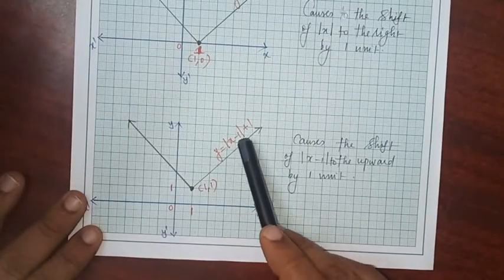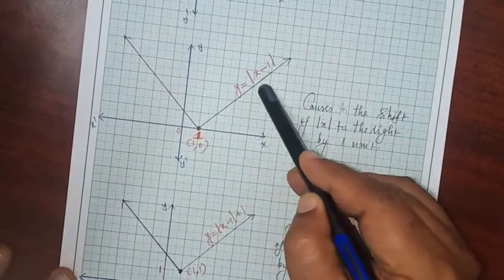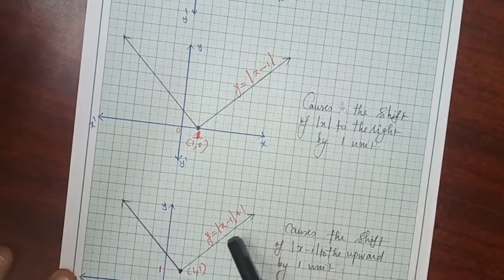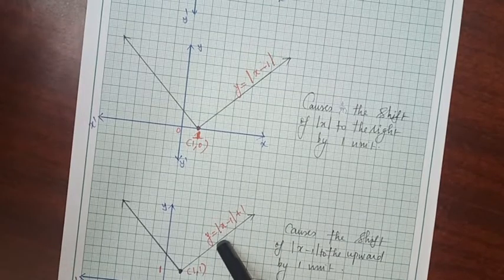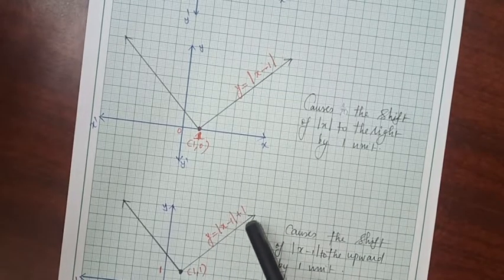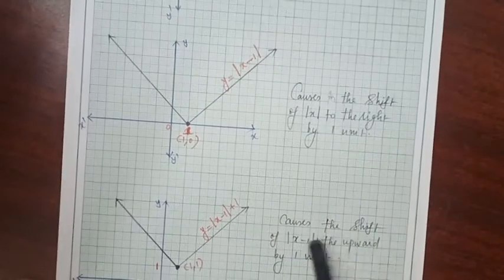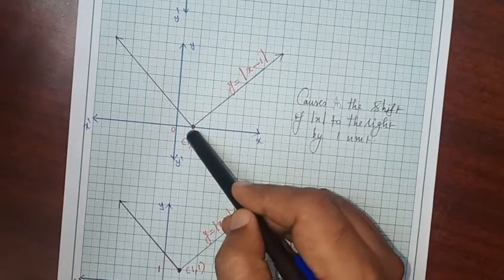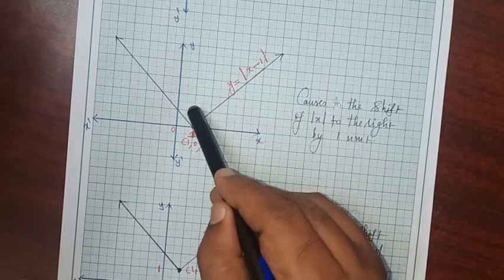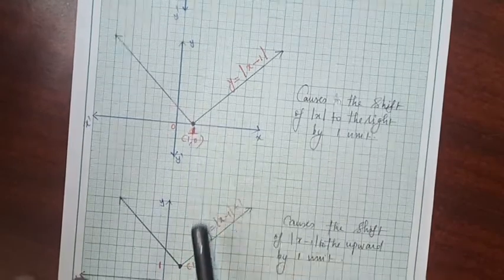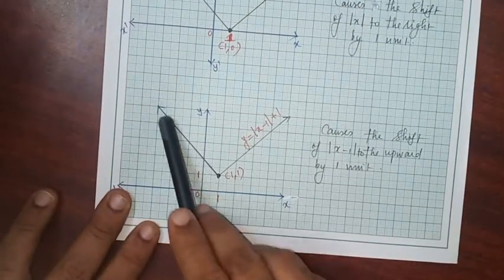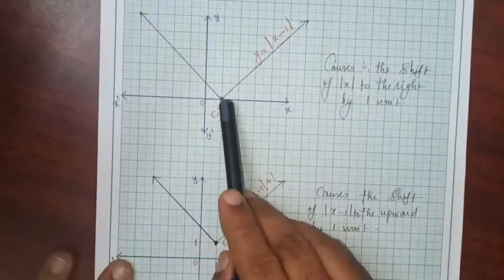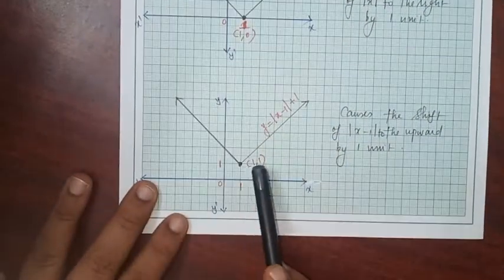Now y = |x - 1| + 1. Consider the entire |x - 1| as f(x). Here 1 is added to f(x), so this is of the form y = f(x) + d. This causes the shift of |x - 1| upward by 1 unit. From (1, 0), going upward by 1 unit gives (1, 1). Without changing the shape, draw the diagram. This is subdivision number 1.